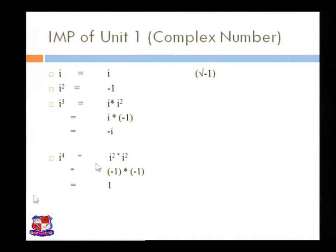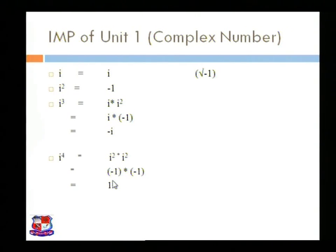Up to now we have already discussed: i is equal to i, i square is equal to minus one, i cube is equal to minus i, and i raised to four is equal to one. These are some important formulas for complex numbers.